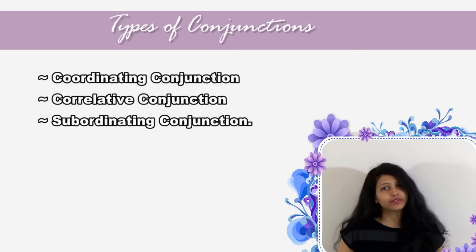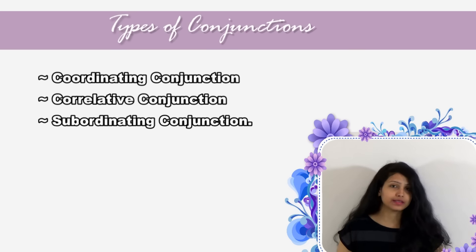For example: 'Ria came but Dia did not.' Here, 'but' is a conjunction joining two clauses — the first clause shows Ria's coming, and the second shows Dia not coming.